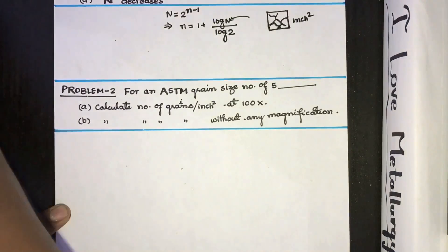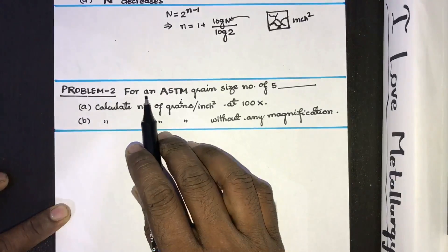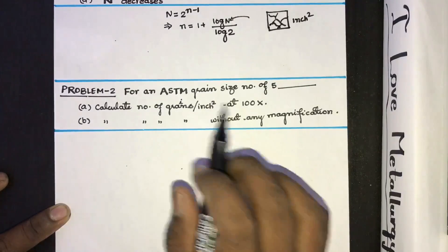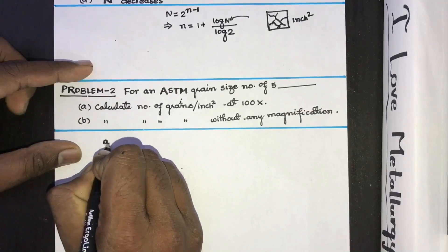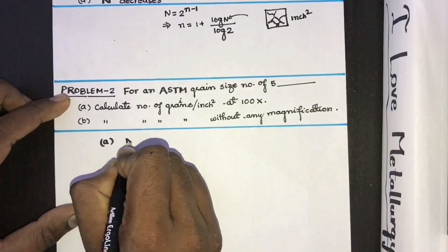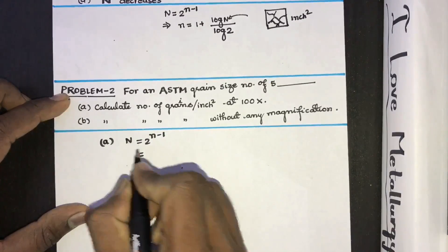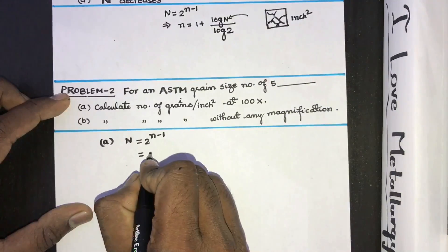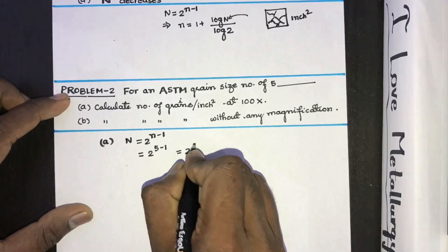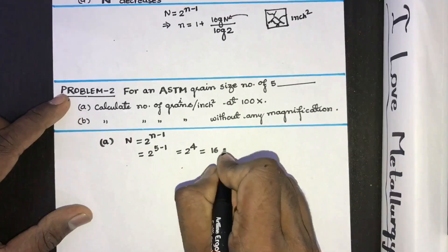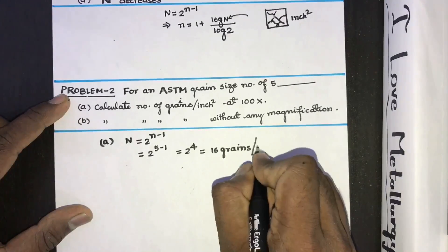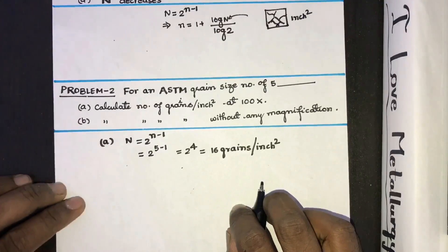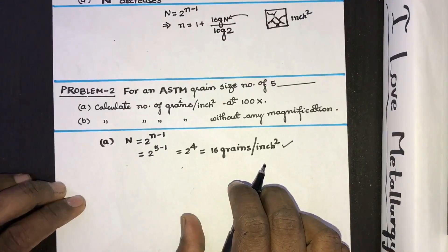Now the next question: for an ASTM grain size number of 5, calculate the number of grains per inch square at a magnification of 100. We use the formula capital N equals 2 to the power n minus 1, where small n equals 5. That gives 2 to the power 4, which equals 16 grains per inch square.